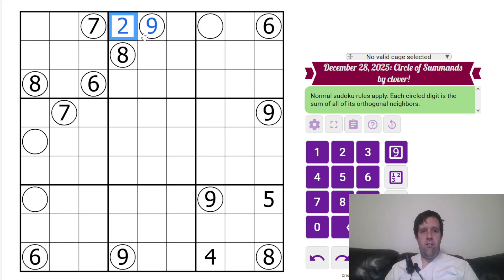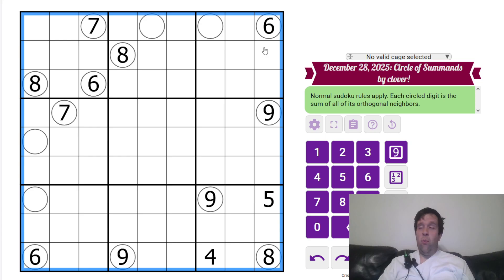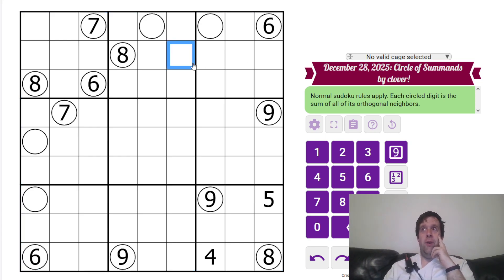Digits orthogonally neighboring it, so like that eight there must have digits there. If there's a circle, it's the sum of all of its orthogonal neighbors. Like, if this was nine, this could be two, three, four. Maybe that is actually what it is. I do not remember. And six here would be like five and one or something. That's it. That's all you need to know to solve today's puzzle.